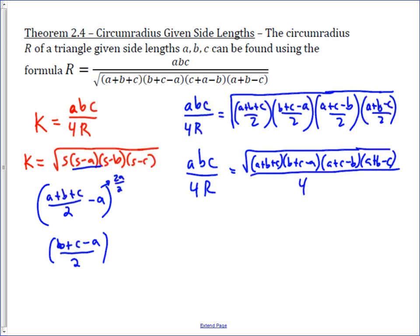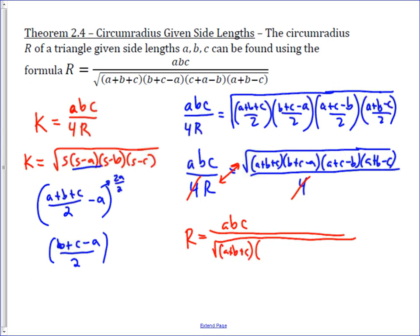There's a 4 in both denominators, so those cancel out. Then all you need to do is cross-multiply, and that gives you R equals ABC over the square root of (A + B + C)(B + C - A)(A + C - B)(A + B - C). This gives us a great way to find the circumradius of a triangle knowing only the side lengths.